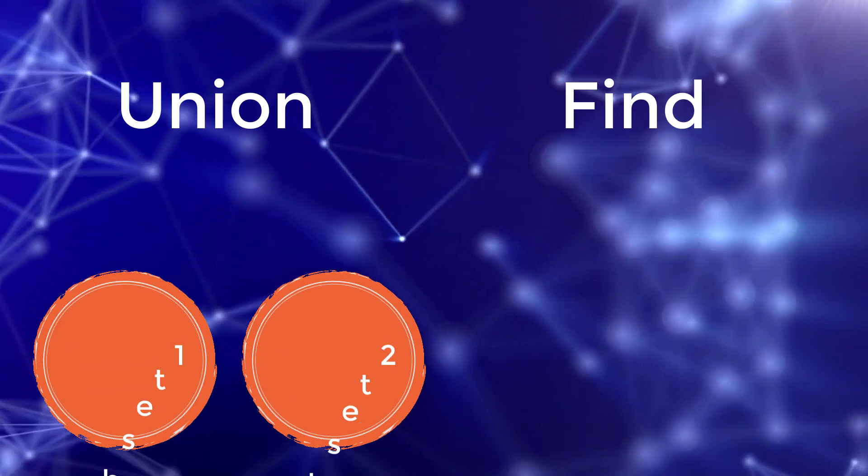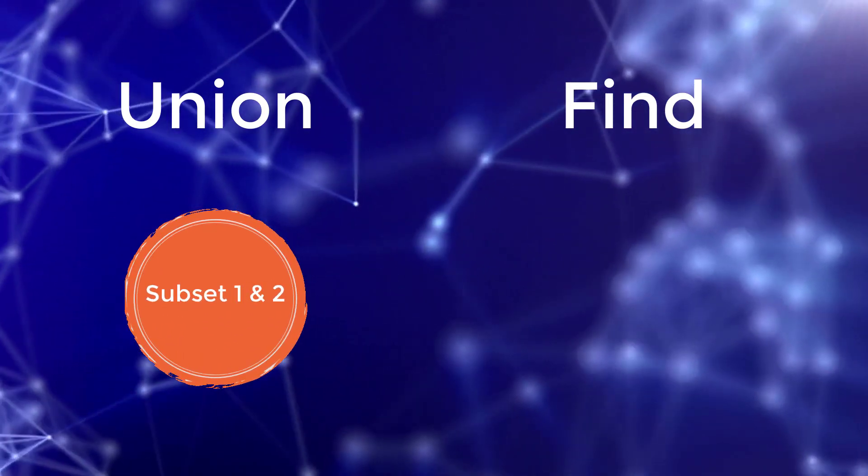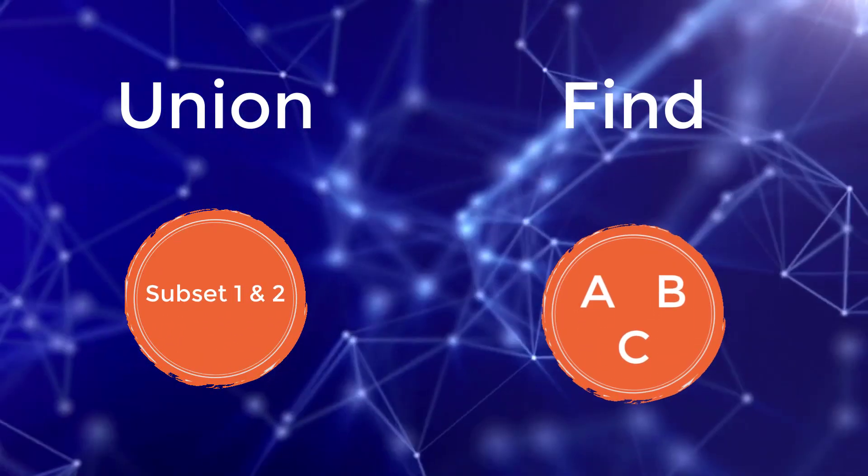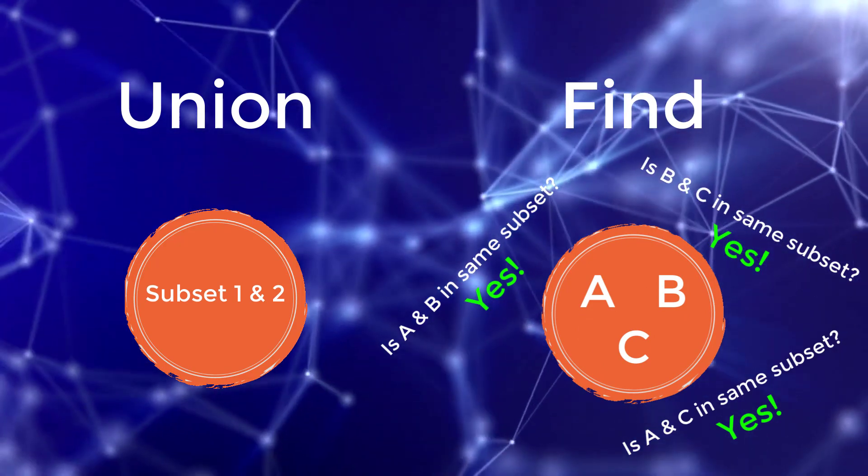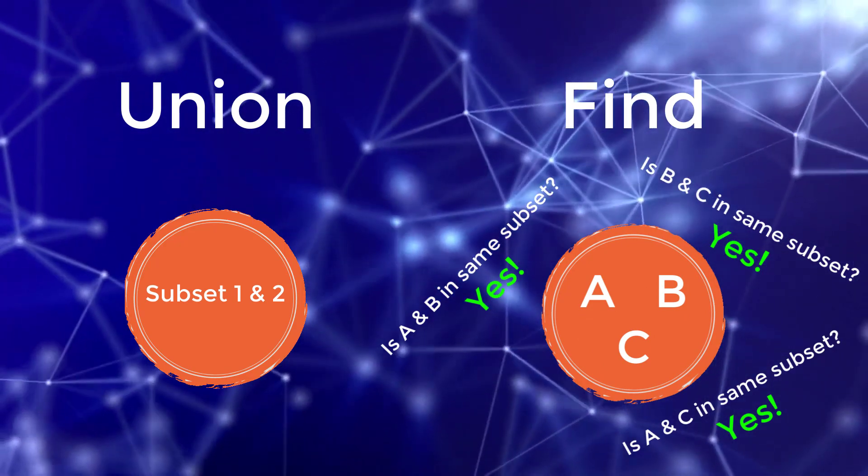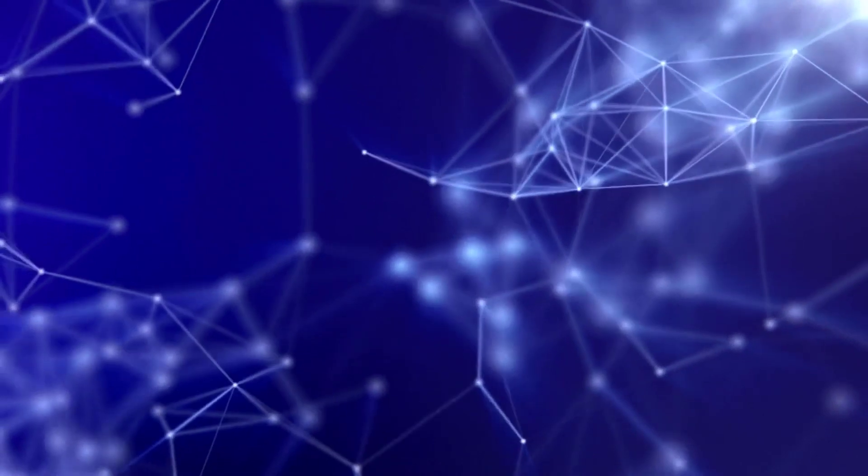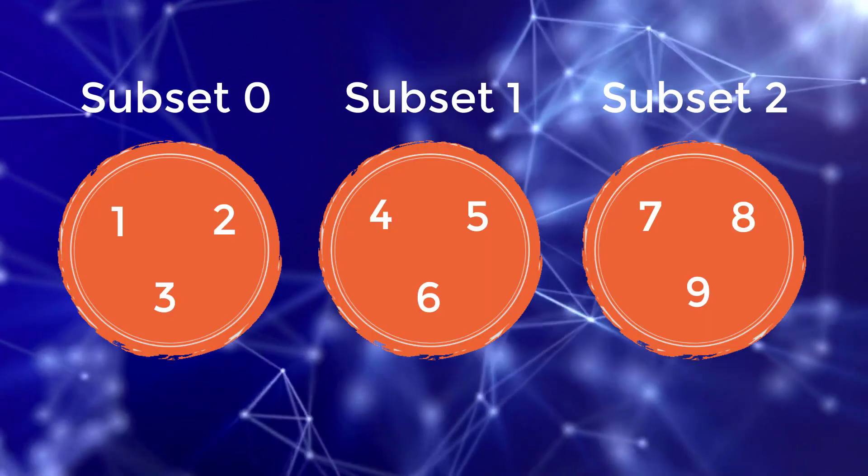And union will merge two subsets together into one, and then find will perform a search to determine if two objects are in the same subset. So for example, let's say I have three subsets total, each containing a group of numbers.